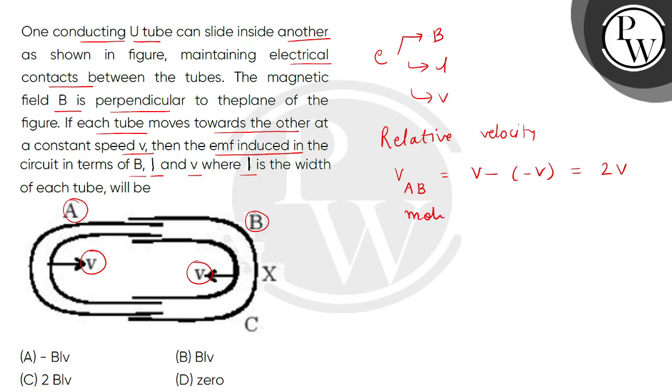This is a case of motional EMF. Both magnetic field values are B, and they are perpendicular. We can find the induced EMF as the product of B, l, and the velocity. The velocity is 2v, so the EMF equals B times l times 2v. The correct answer is option C.